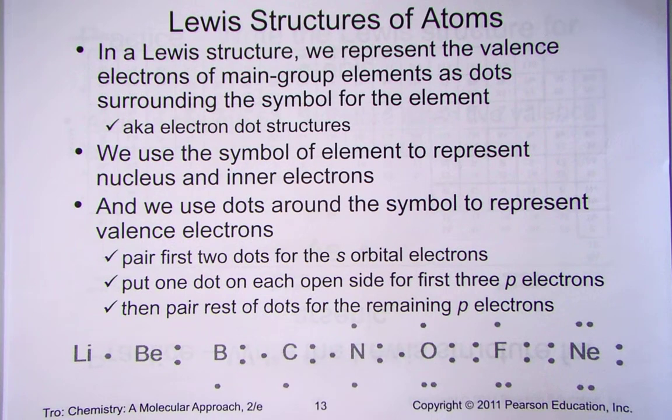If you think about what we've said in a Lewis structure, we represent the valence electrons of main group elements as dots. We call those electron dot structures. We use the symbol of the element to represent the nucleus and inner electrons. As we use dots around the symbol to represent valence shells, here are the rules.